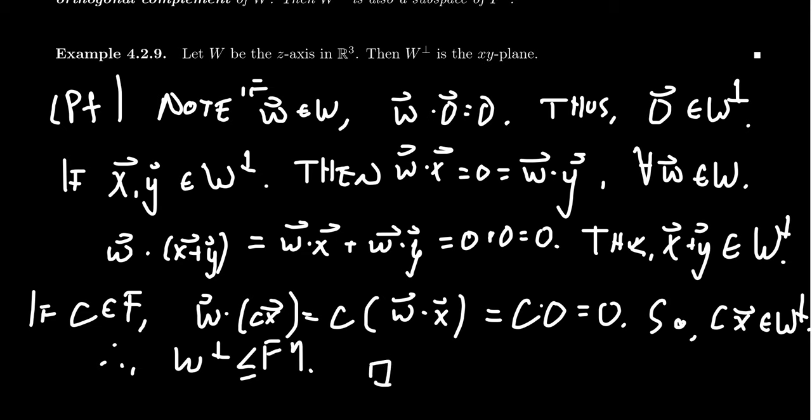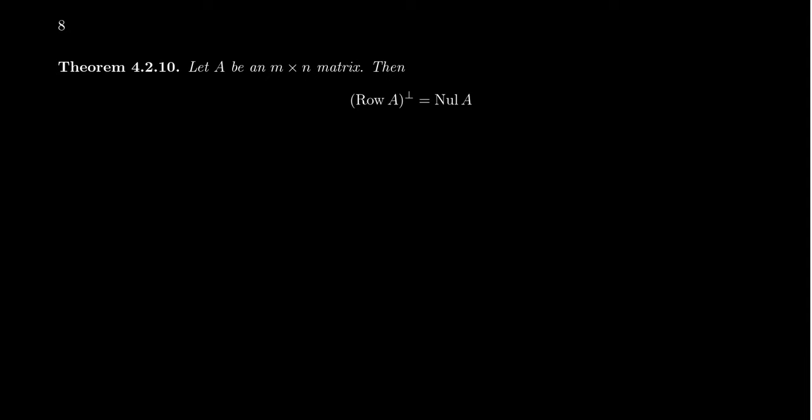So the orthogonal complement will always be a subspace — it's a vector space in its own right, and this is a pretty impressive statement. A very special case worth mentioning: if you have an M by N matrix A, the orthogonal complement of the row space of A is equal to the null space of A.